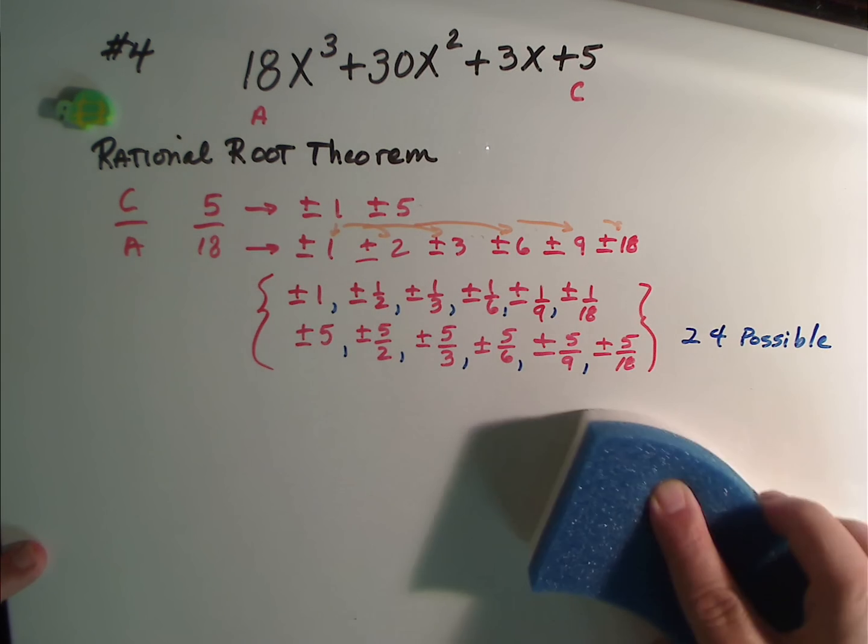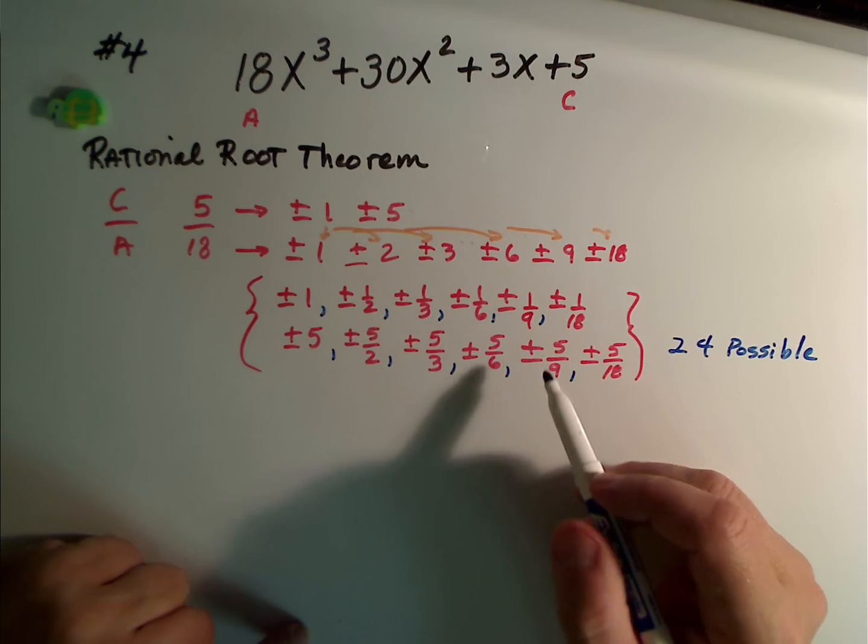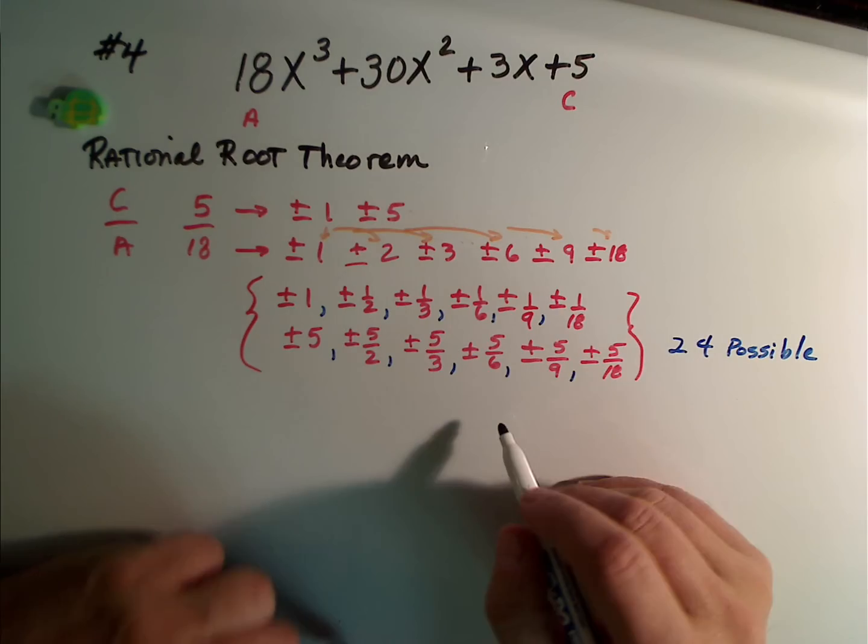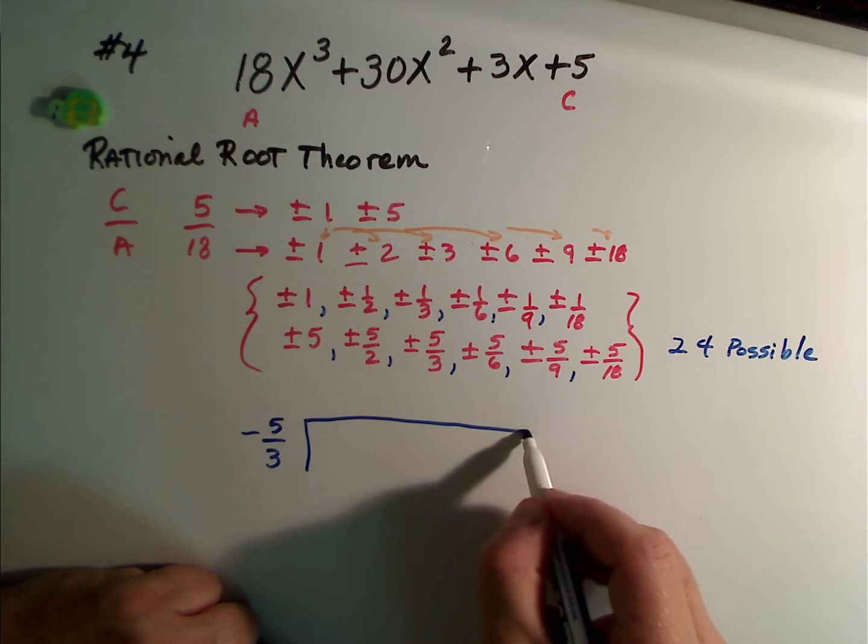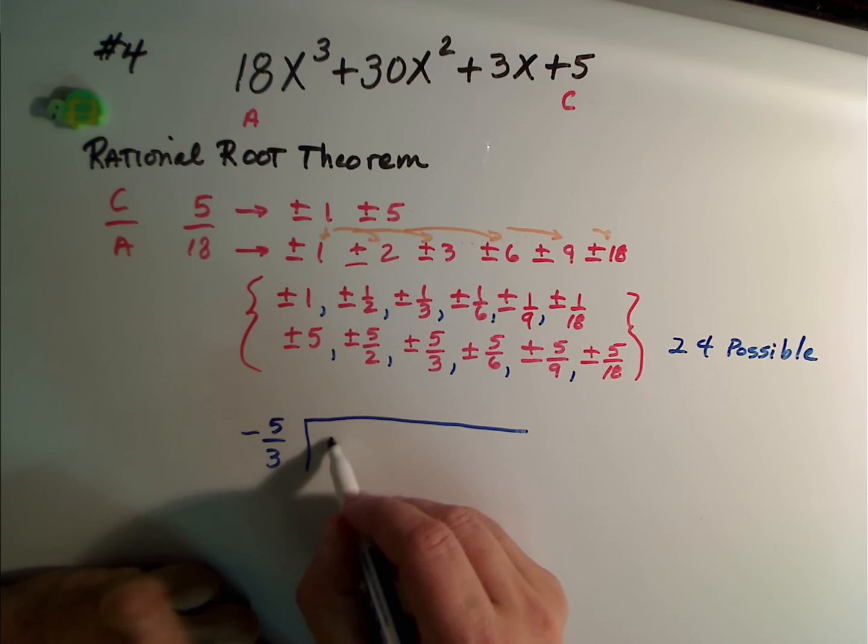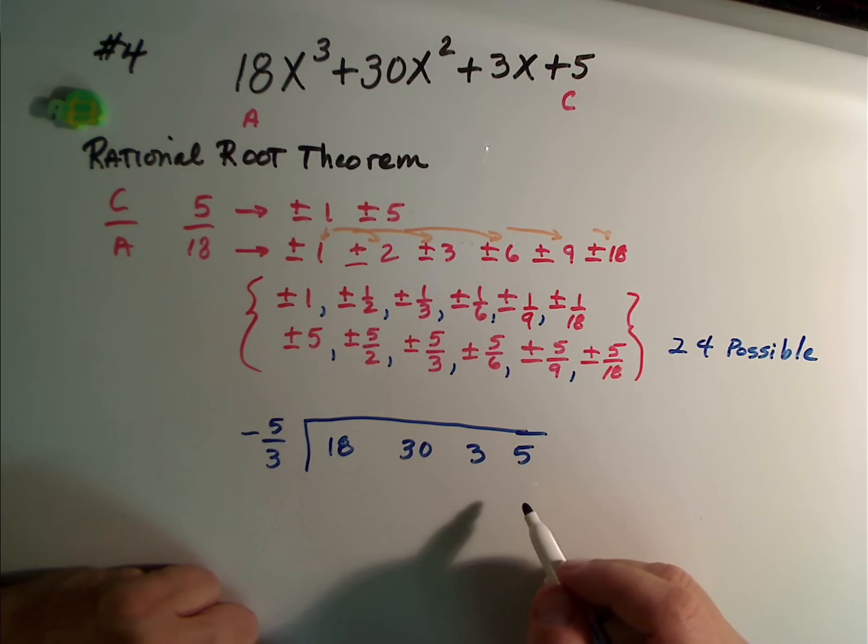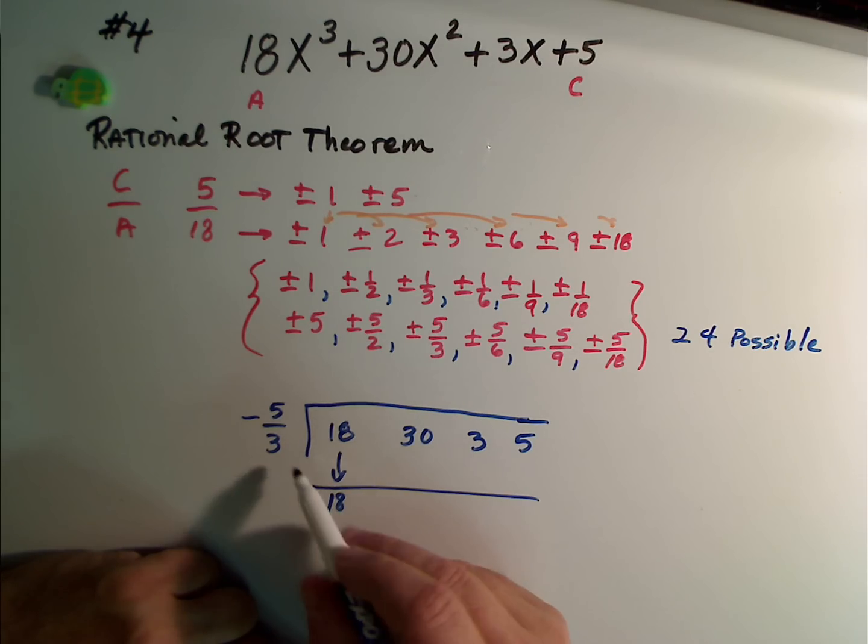Now, since that didn't work, we have to look for a new possible root. What should I try? Well, how about negative 5/3? 18, 30, 3, and 5. Since our fellow student was wrong on this, we're going to keep trying some other possible rational roots. 18 times 5/3. Well, 18 divided by 3 is 6. 6 times 5 is 30. So this would be negative 30.